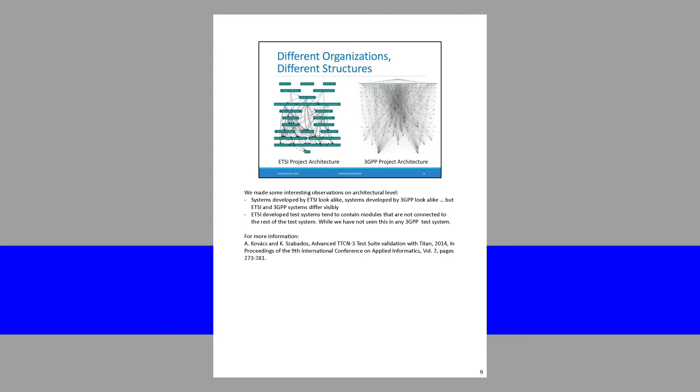We went back to the architecture and created a visualization where script files not connected to the system are elevated above the graph, and dependencies are shown as a layered architecture. We noticed something peculiar: there are test suites from ETSI and from 3GPP, and they were completely different. All ETSI test suites looked the same as each other, and all 3GPP test suites looked the same as each other.